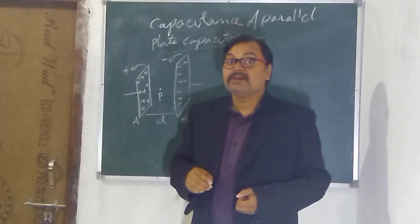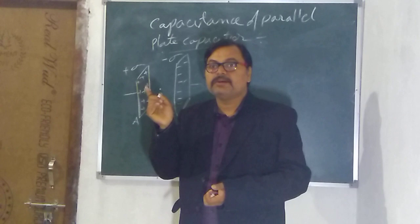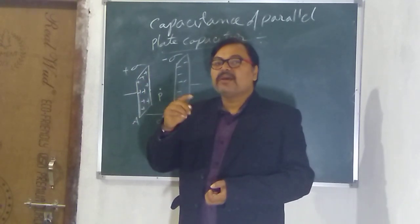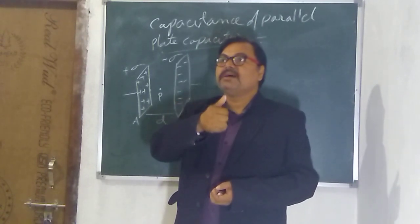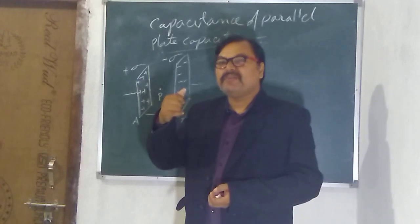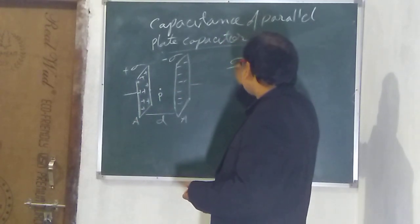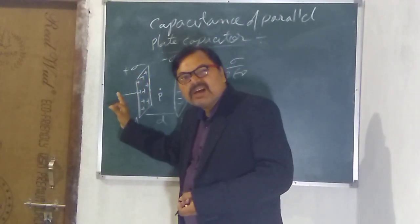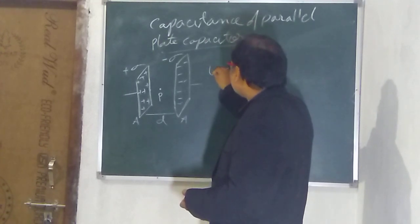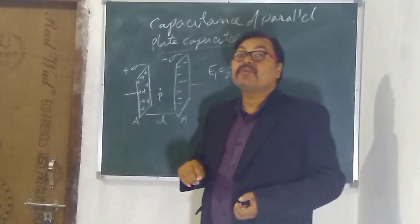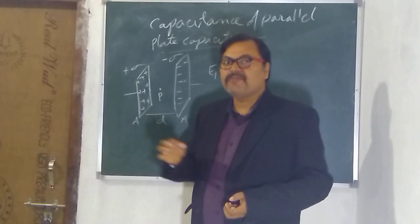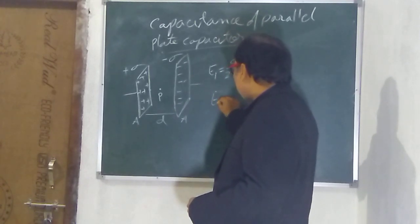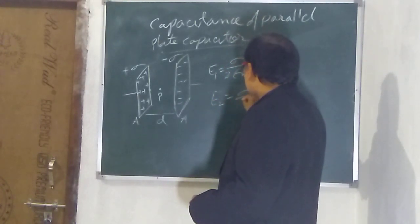Now we have to recall the result derived during the application of Gauss's law — the electric field due to an infinite charged sheet. We got that expression: E equals sigma upon 2 epsilon naught. So here, the electric field due to the positively charged sheet at point B, let it be E1, is equal to sigma upon 2 epsilon naught. Similarly, the electric field due to the negatively charged sheet at point B, let it be E2, is again sigma upon 2 epsilon naught.